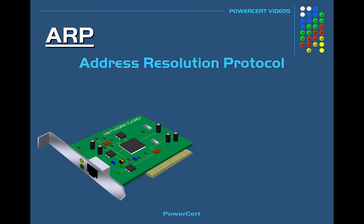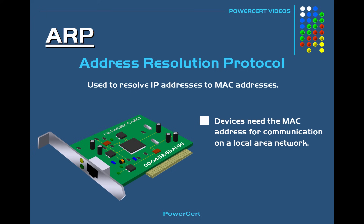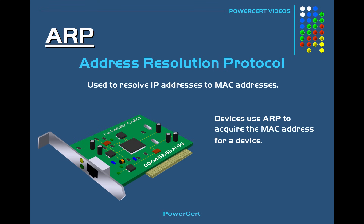ARP stands for Address Resolution Protocol. This is a protocol used to resolve IP addresses to MAC addresses. The MAC address is a physical address of a device — a globally unique number assigned to every network interface card. Whenever a device needs to communicate with another device on a local area network, it needs the MAC address for that device, and devices use ARP to acquire it.